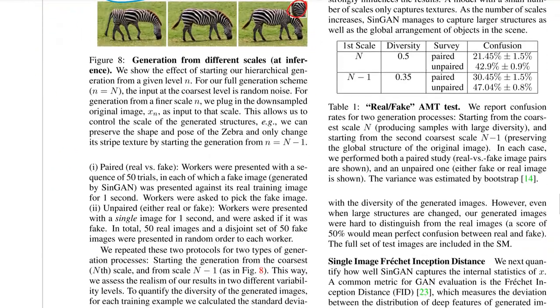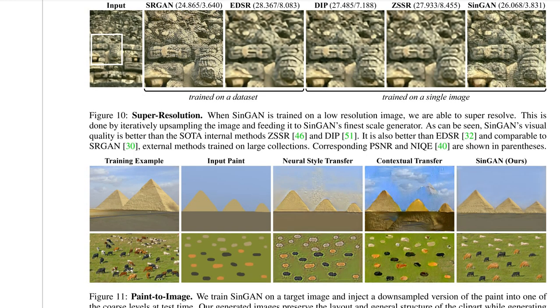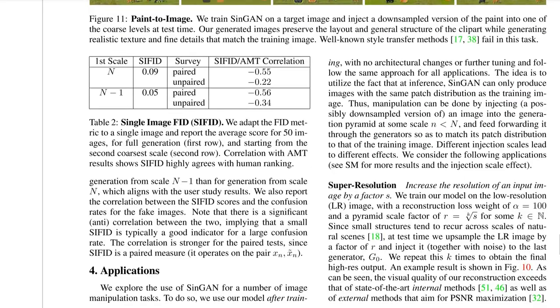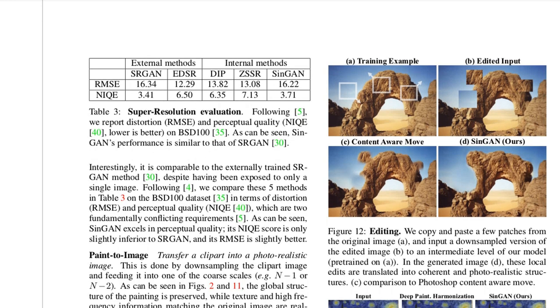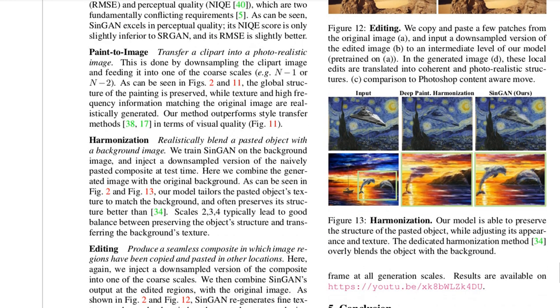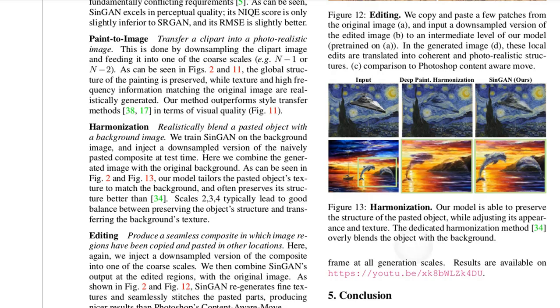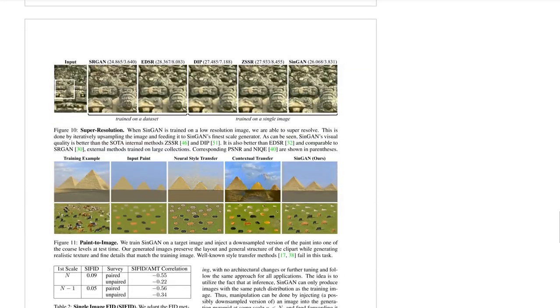And they do a bunch of more experiments where you can do a lot of playful things with this thing. There is code available. For example here you can see editing again as an example where they compare also with content aware move which I think is implemented in Photoshop, and paint harmonization as we saw before. So all of these things are very playful, are very cool and I encourage you to check out this paper and the code. It seems pretty easy.